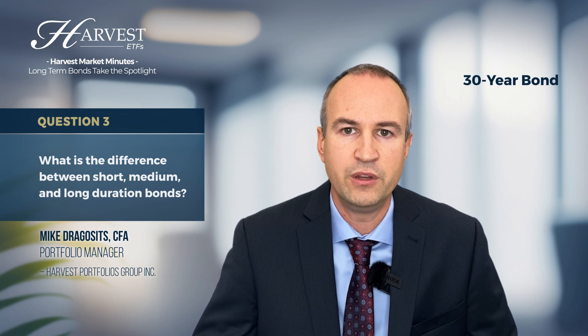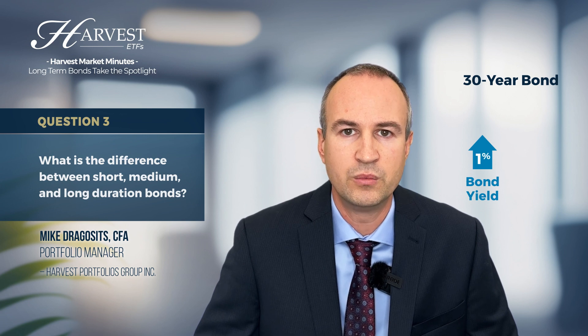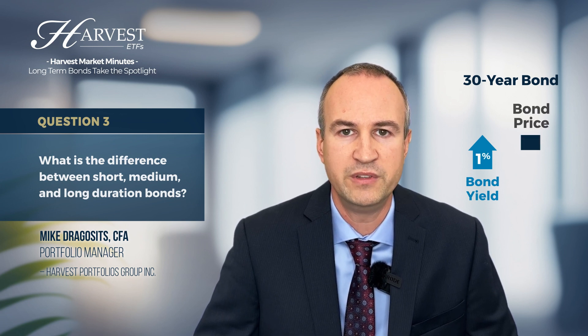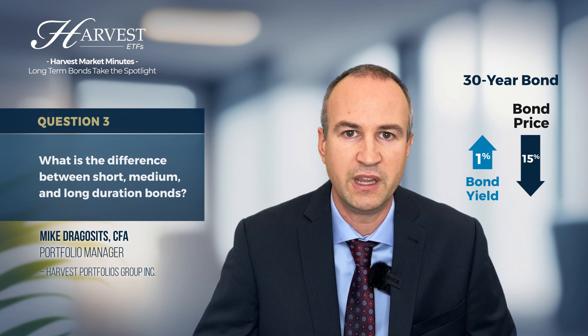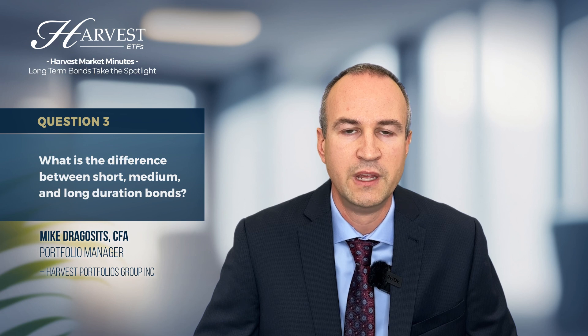Whereas if you take a 30-year bond, it might have a modified duration of say 15. So a 1% increase in the yield will cause the bond price to approximately go down by about 15%, and vice versa — if yields go down by 1%, the bond price will go up by 15%.